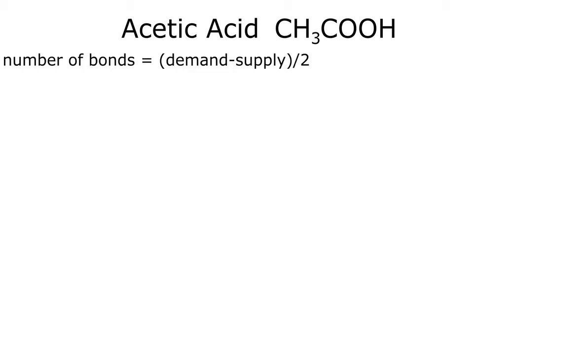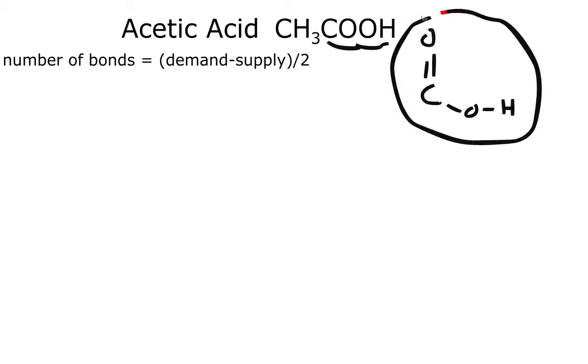Before we begin drawing, what we see here is we have a COOH, and COOH just means we have a carboxylic acid. A carboxylic acid is a functional group that looks like this: we have a C double bonded to an O, which is a carbonyl, and we also have this OH, which is a hydroxyl. All of this together is a carboxylic acid.